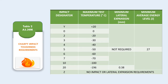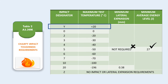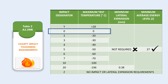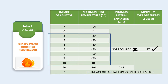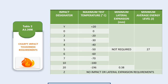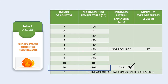Up to 100 degrees Celsius, there is only a requirement of minimum average energy of 27 joules and no lateral expansion requirement. 'Y' shows that the maximum test temperature of plus 20 degrees Celsius shall fulfill the requirement of minimum average energy of 27 joules. 'Zero' shows fulfillment of the requirement at zero degrees Celsius. Similarly, '2' indicates a test temperature of minus 20, and '3' indicates minus 30, and so on.